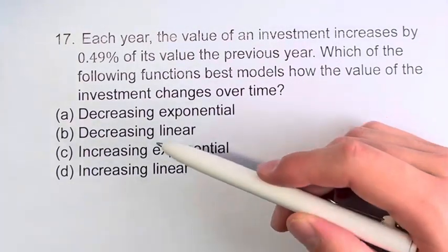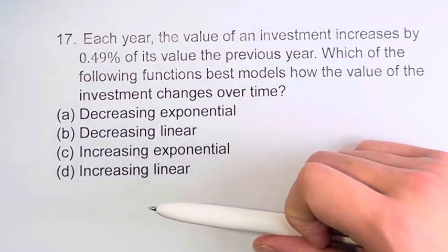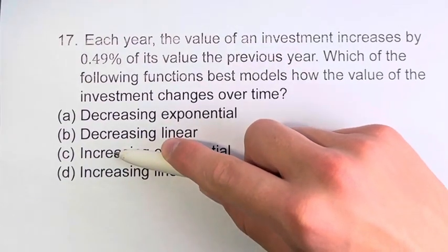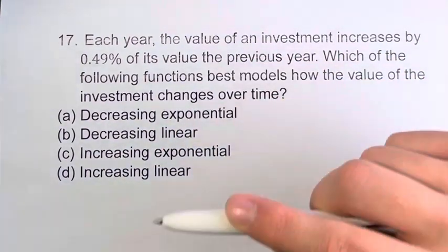So we have four options here, and we basically have two distinctions to make. Is it decreasing or is it increasing? And is it exponential or is it linear?